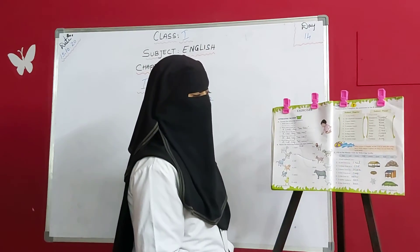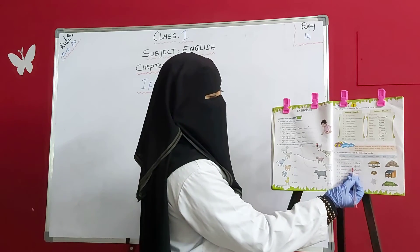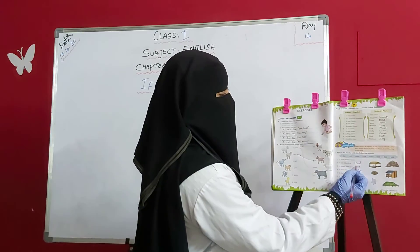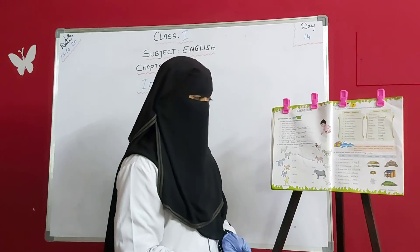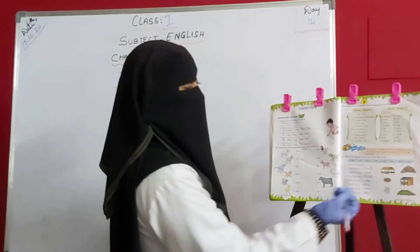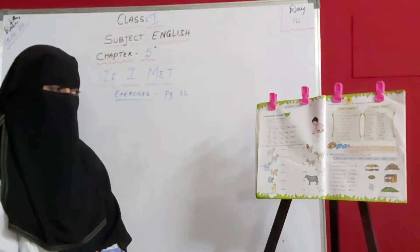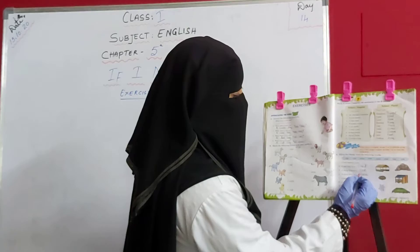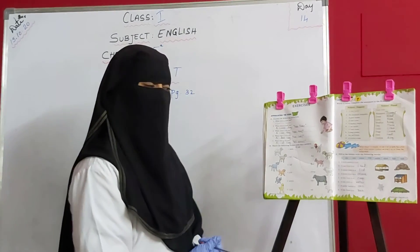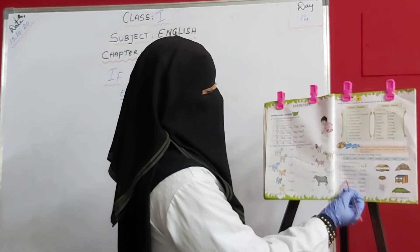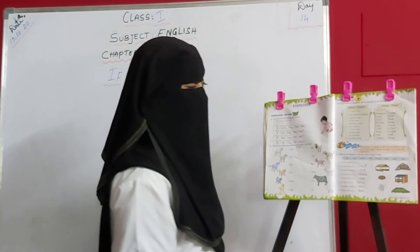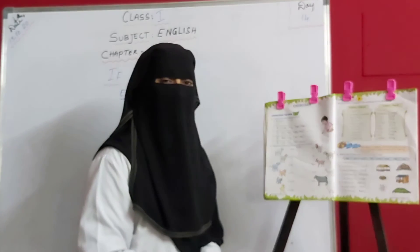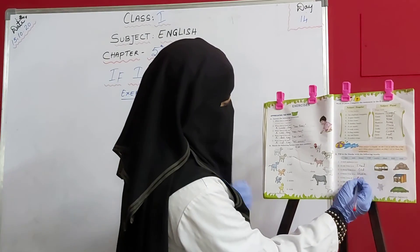A sheep lives in a fold — the home of the sheep is called a fold. Next, a horse lives in a stable — the home of a horse is called a stable, S-T-A-B-L-E. Next, a hen lives in a coop — the home of a hen is called a coop, C-O-O-P.